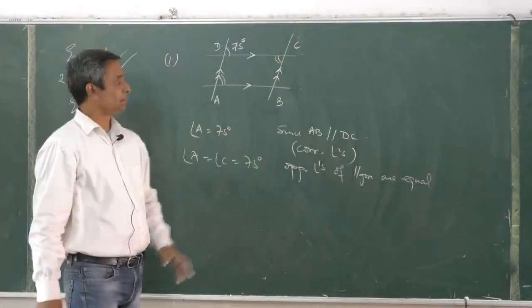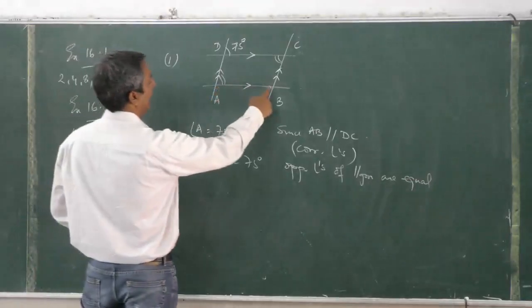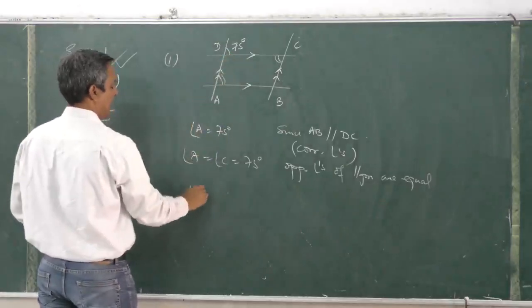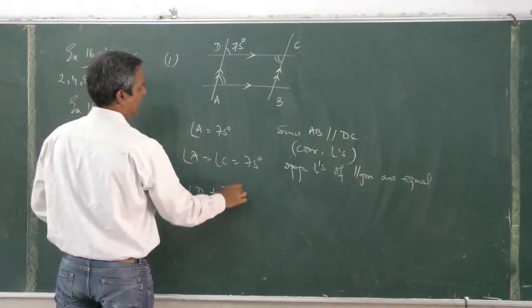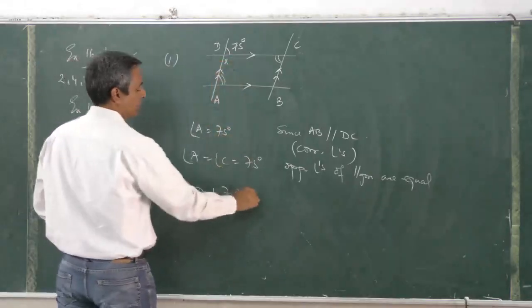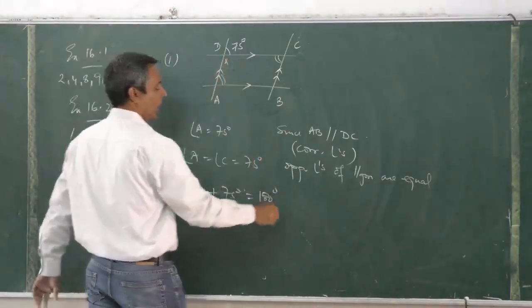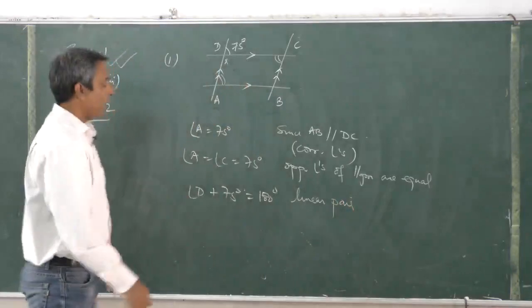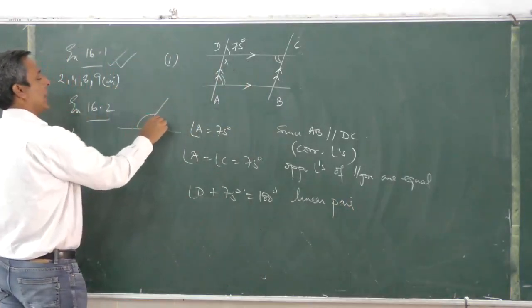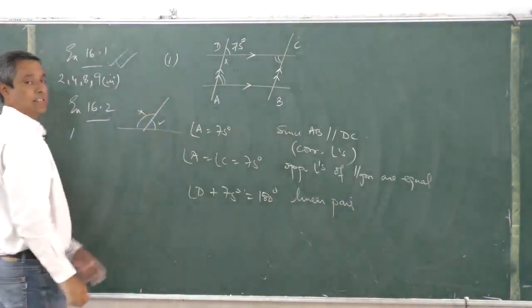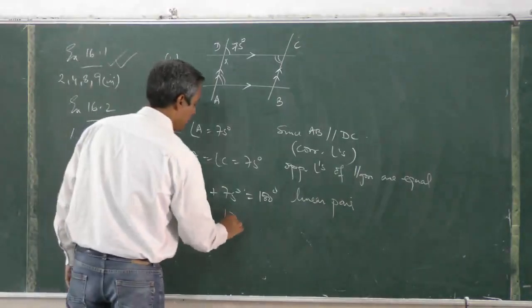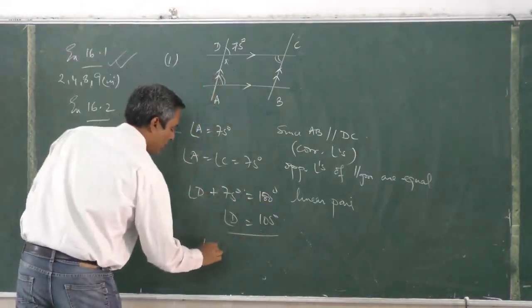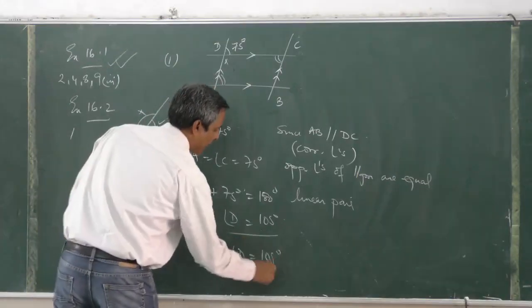Now angle A and angle B - or better than that, let me go here. This inside angle, angle D plus 75 degrees - this angle, angle B is equal to 80 degrees. This angle I am looking at is equal to 180 degrees. Over here, why? Linear pair. If you remember that reason from class 7, when two angles are in a straight line and I add them, their sum is 180 degrees. So angle D is 180 degrees minus that, which is 105 degrees. And angle B is equal to angle D, 105 degrees - opposite angles of a parallelogram.